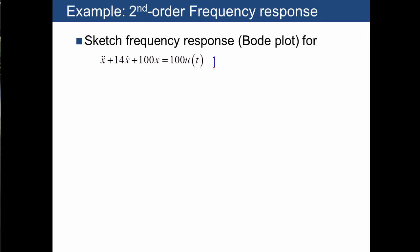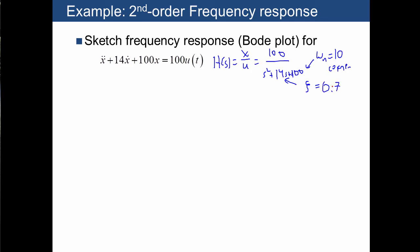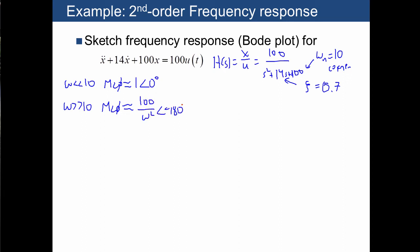Let's do another example. This is a second-order system where we have a transfer function h(s) equal to 100 over s squared plus 14s plus 100. From here we can see that omega_n is equal to 10, and that's the corner frequency. We can also solve for zeta, which ends up being 0.7. So we have one behavior for low frequencies — imagine plugging in a very small value of omega — essentially getting 100 over 100, or 1 at angle 0. At very high frequencies, the s squared term dominates, giving us 100 over omega squared with a phase of negative 180 degrees.